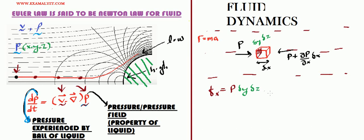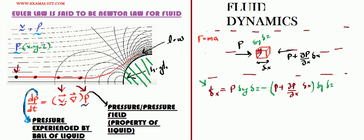On the other side, the cube is experiencing pressure equal to P plus (∂P/∂x)·delta x, and the area is the same delta y times delta z. We have to subtract because both pressures act in opposite directions. So this is the net force along the x axis.